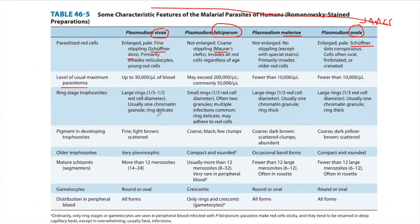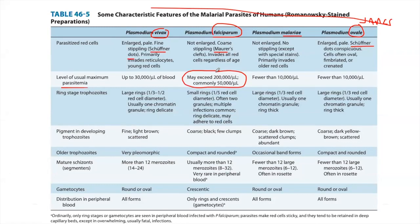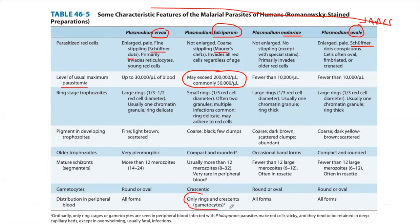Of the four species, falciparum presents with a banana-shaped gametocyte — also called a crescent shape. In the peripheral blood of falciparum infections, only the ring forms and the crescents (banana-shaped gametocytes) are found. This is a highly testable feature.